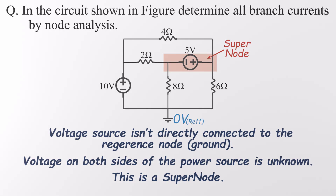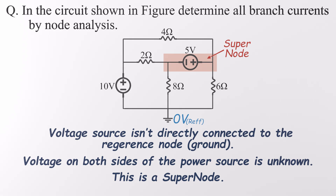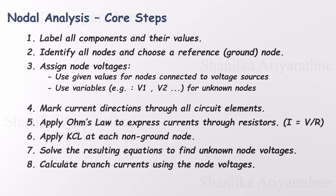Sounds intimidating, but don't worry — it's not as tricky as it sounds. When we encounter a supernode, we treat the two nodes on either side of the floating voltage source as one big node when applying Kirchhoff's Current Law, or KCL. That clever move lets us sidestep the whole issue of not knowing the current through the voltage source. We'll be using the standard 8-step method for nodal analysis.